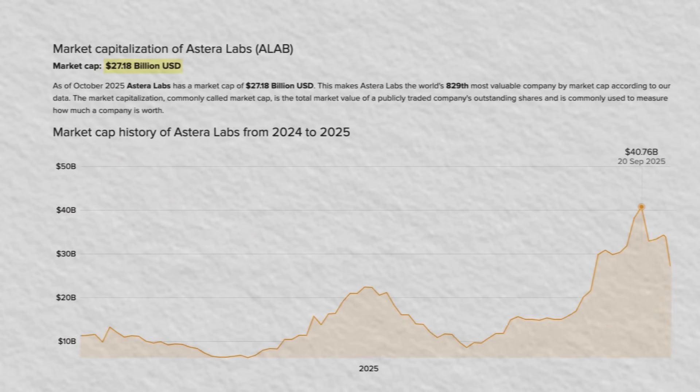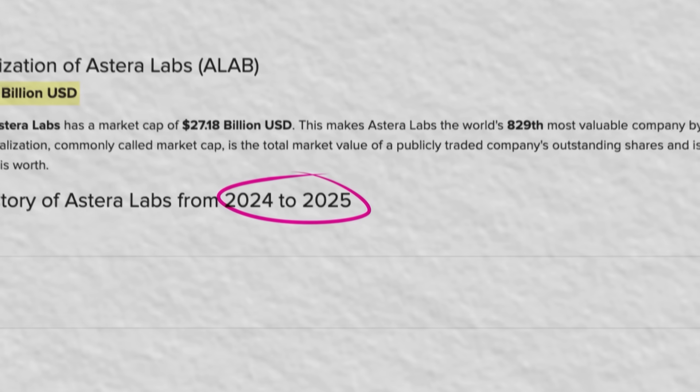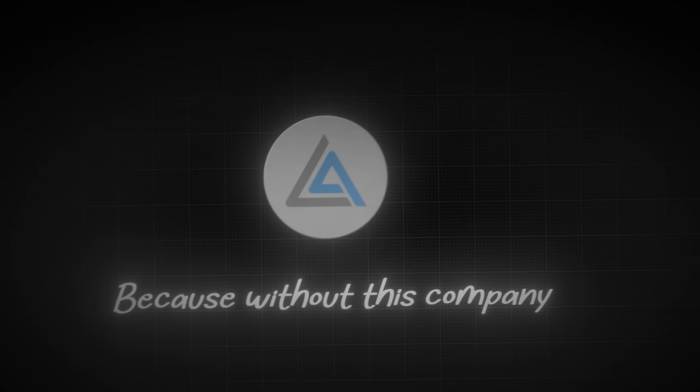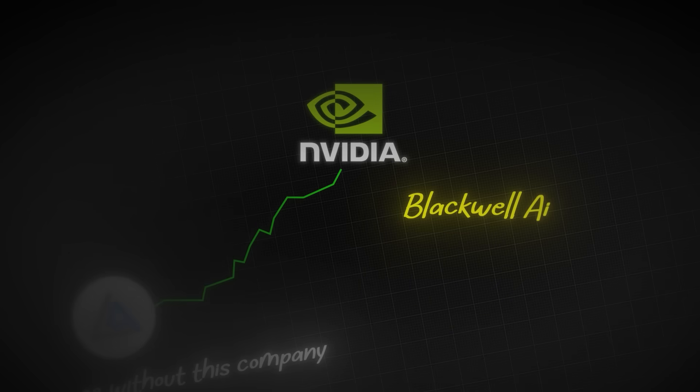Today, their market cap has quadrupled in just over a year, with no signs of slowing down. Because without this company, the insatiable success of NVIDIA AI factories like Blackwell and Rubin would likely grind to a halt.